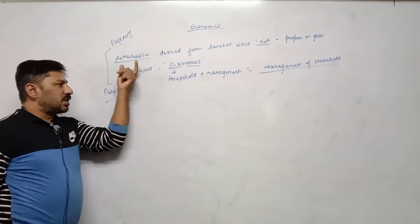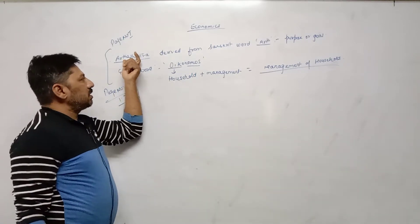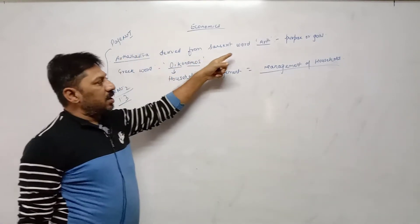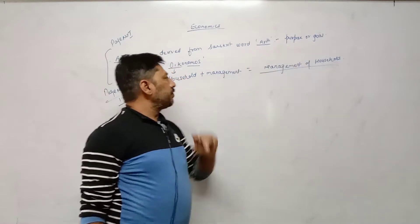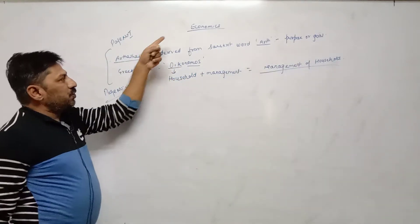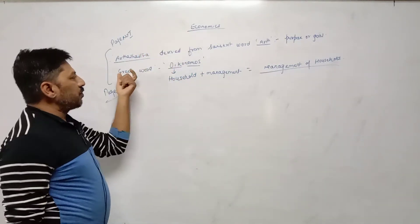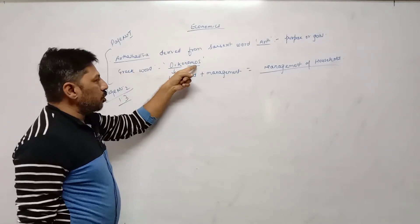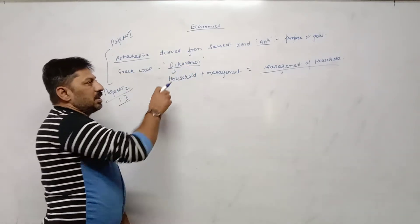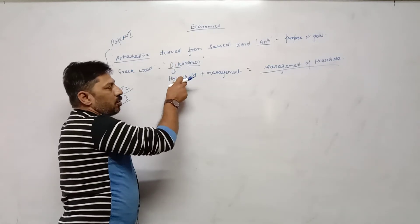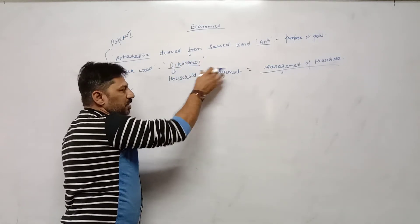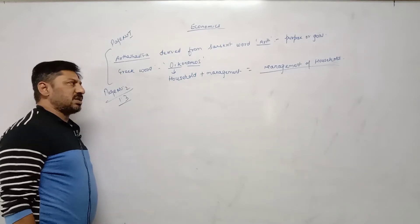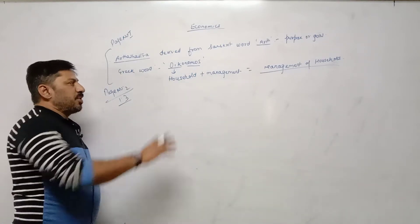The English word economics is derived from the Greek word Oikonomos, which has two different words: Oiko meaning household, and Nomos meaning management. So economics means management of household. This is page number one.